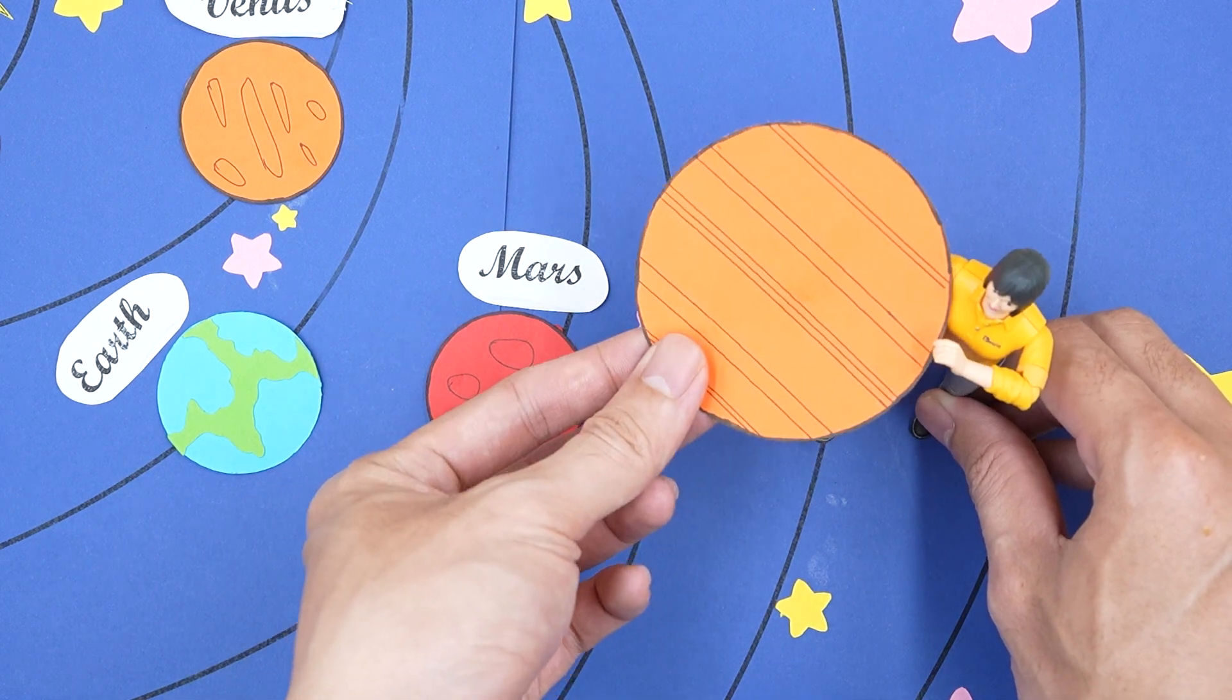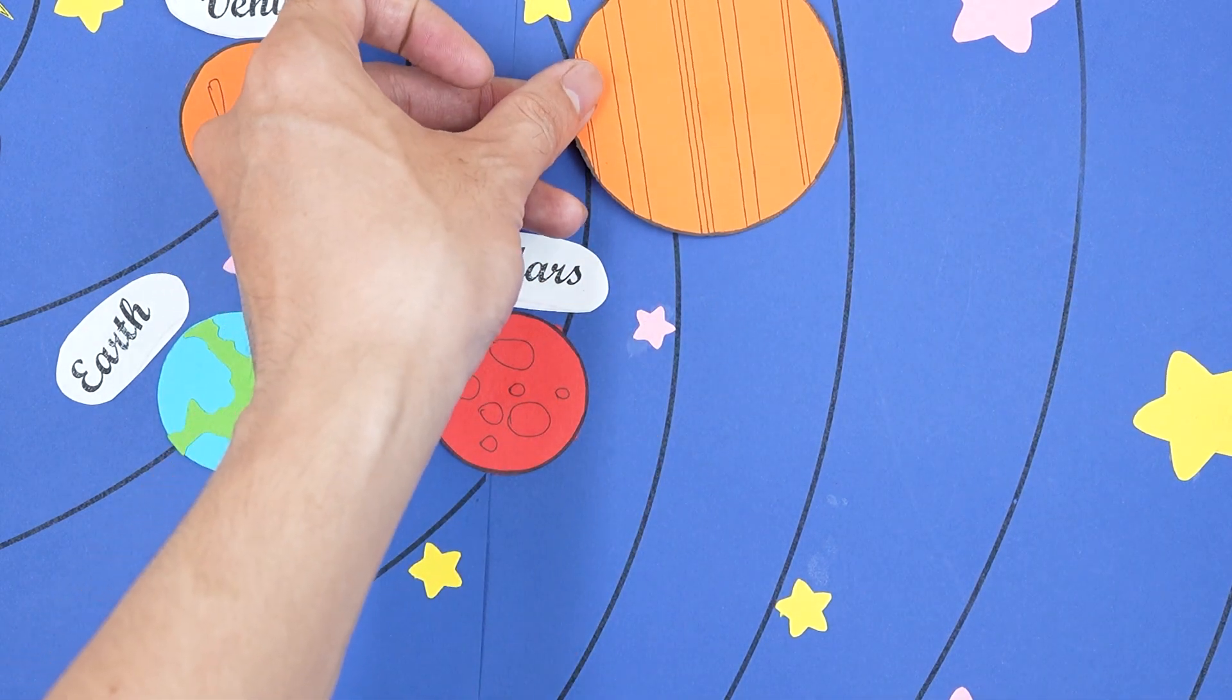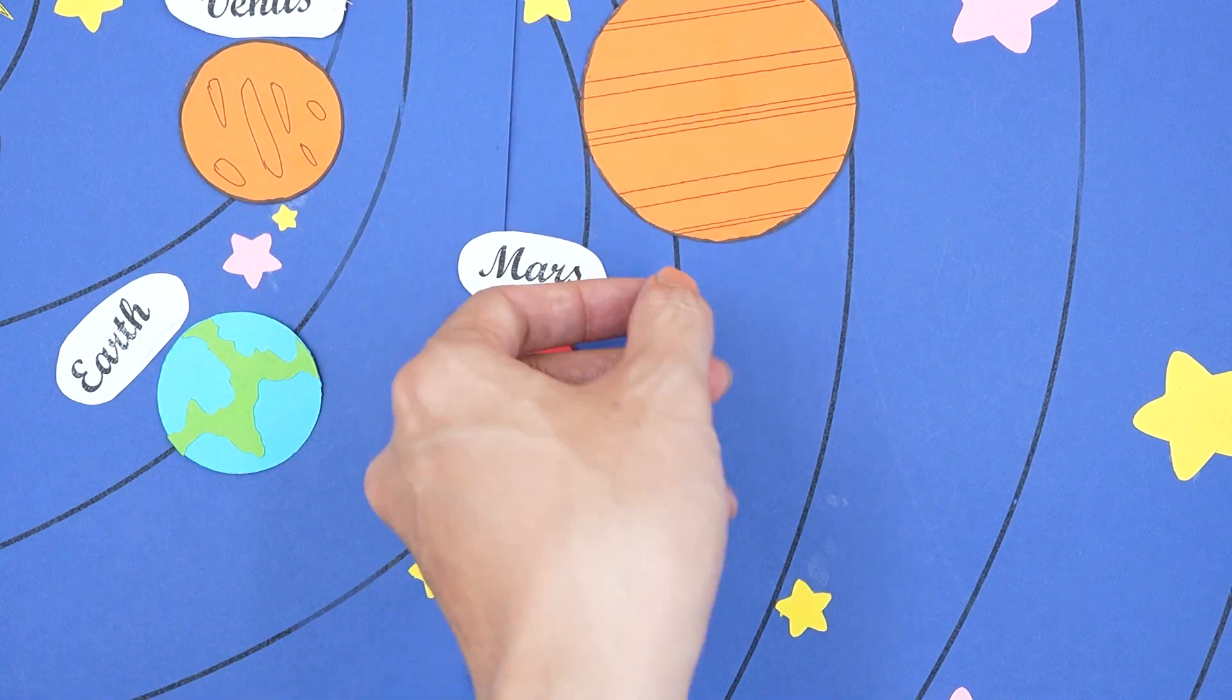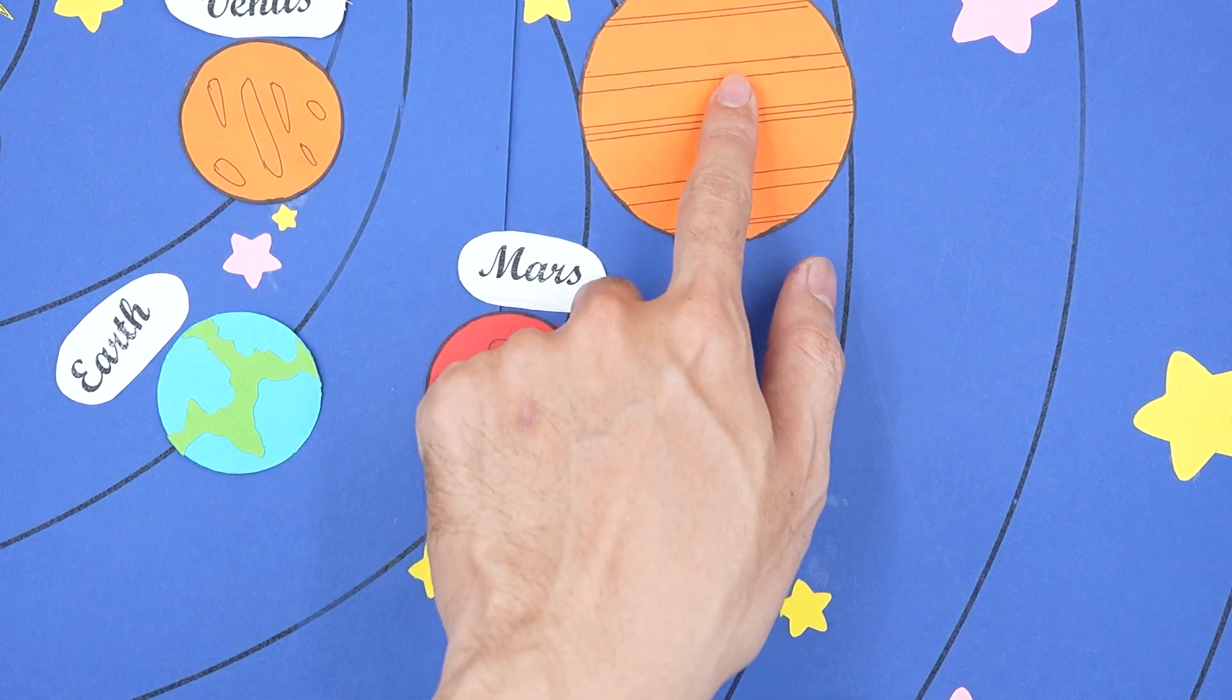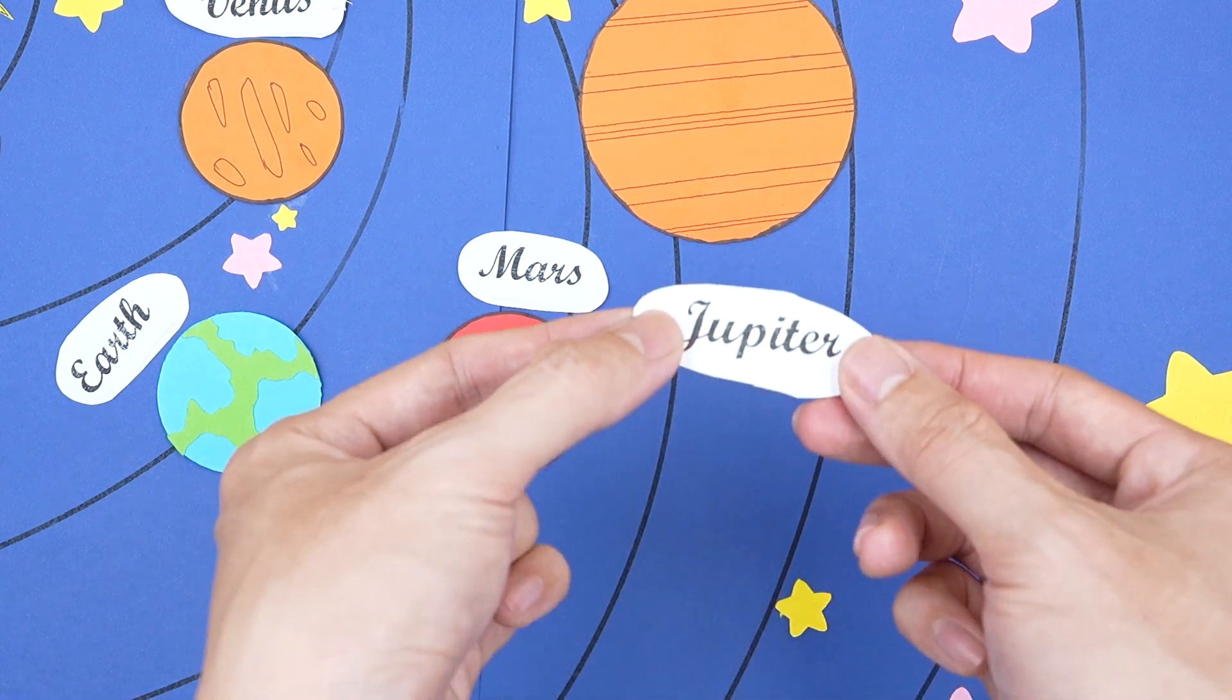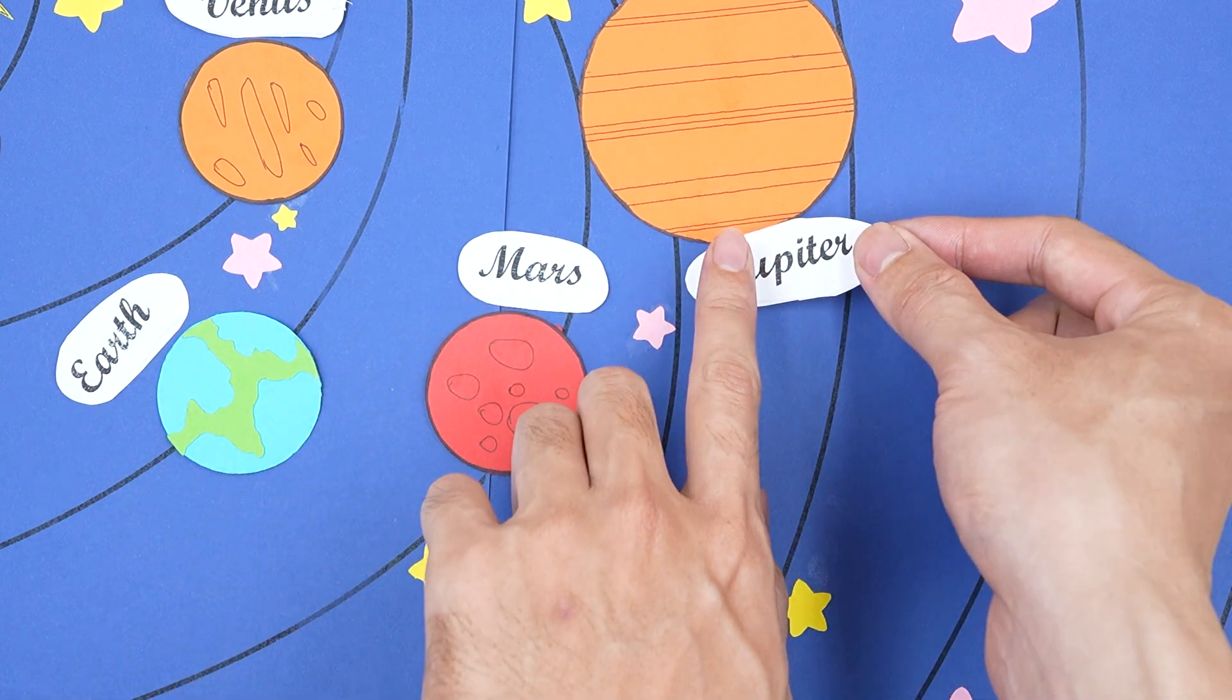Okay, I will help you move Jupiter down to the fifth position in the solar system. Adjust it to balance it for a beautiful painting. And now I am going to add the word Jupiter to the picture.